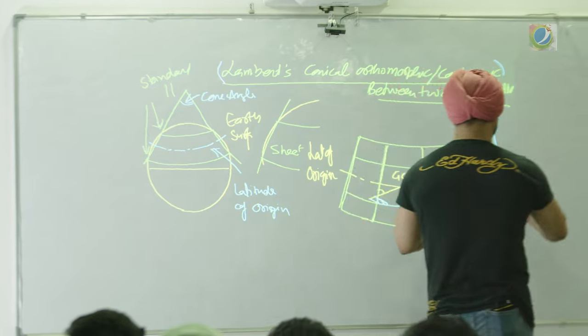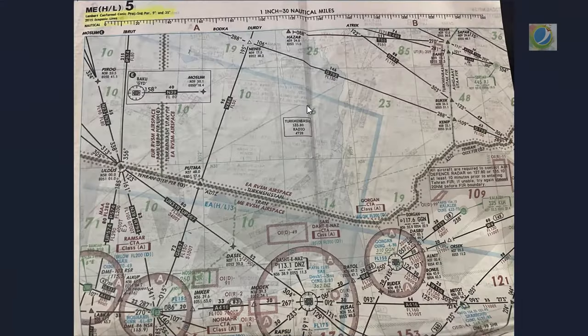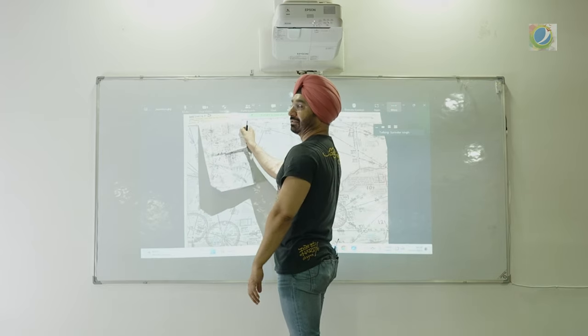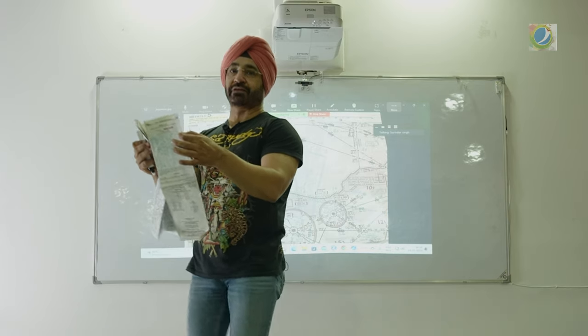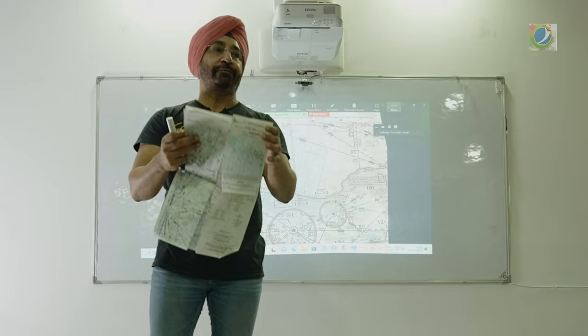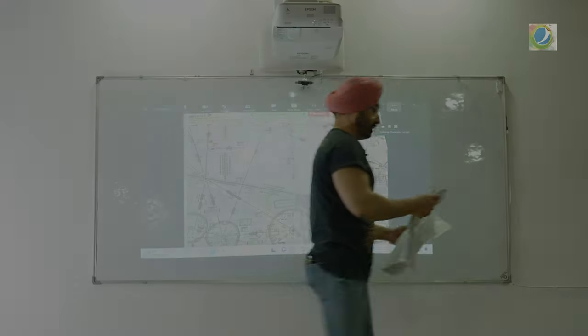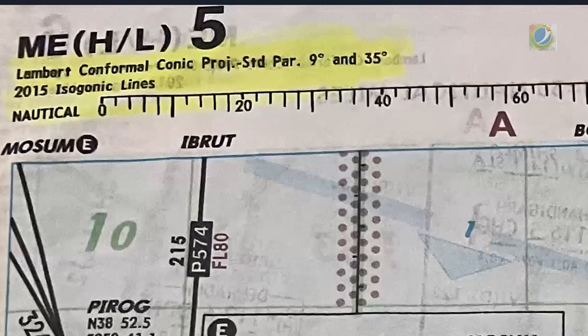Here is the Jeppesen enroute chart which you use for navigation. When you open the first fold of this chart, on the top left you can read: Lambert's conformal conical projection, standard parallels of 9 degrees and 35 degrees.